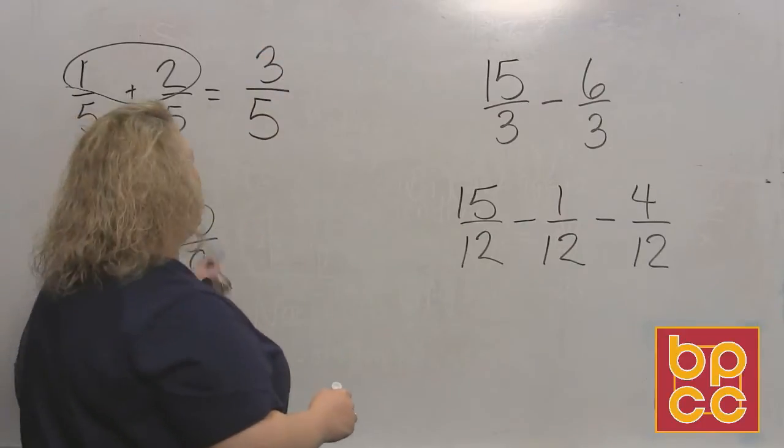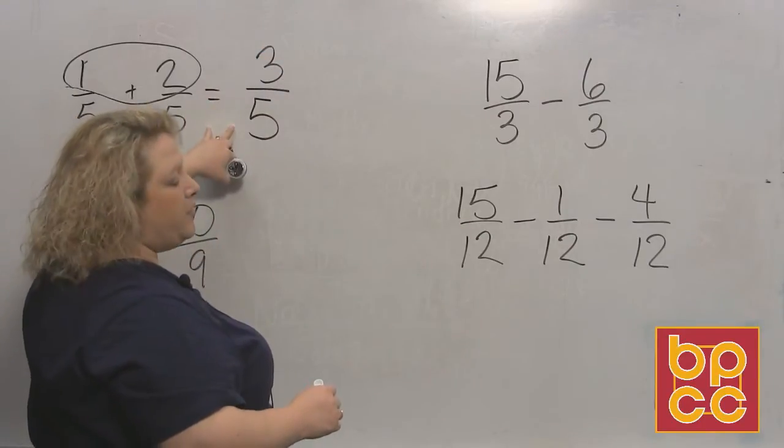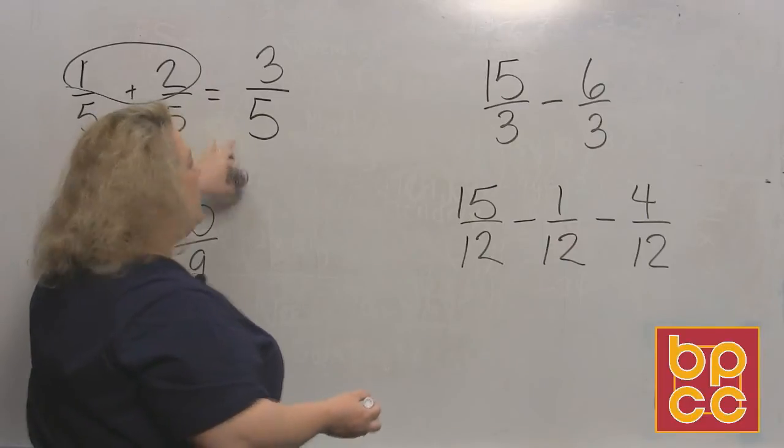At this point you reduce the fraction. Three and five are both prime numbers, you cannot reduce that, so then I stop.